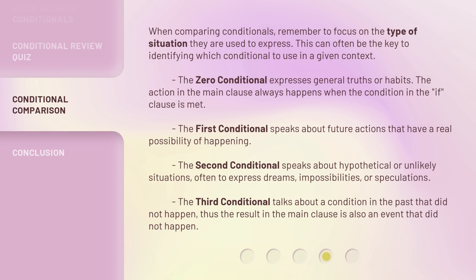When comparing conditionals, remember to focus on the type of situation they are used to express — this is often the key to identifying which conditional to use. The zero conditional expresses general truths or habits; the action in the main clause always happens when the condition is met. The first conditional speaks about future actions with a real possibility of happening. The second conditional covers hypothetical or unlikely situations, often expressing dreams, impossibilities, or speculations. The third conditional talks about a past condition that did not happen, so the result in the main clause is also an event that did not happen.